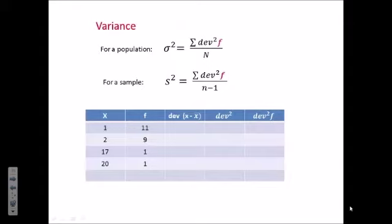Once we have the sample mean, we are ready to calculate the variance. Now, for a population, this is the formula we use. Sigma squared is the symbol for the population variance. It's the sum of the squared deviations multiplied by the frequencies, divided by the population size, uppercase N. Most of the time we're dealing with samples, as we are in this case.